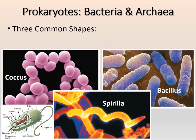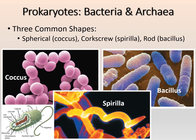Most prokaryotes have one of three shapes. They can be spherical, which we call coccus; corkscrew-shaped; or longer than they are wide, called bacillus. These are the three general common shapes of all prokaryotes, and we can classify them using these shapes — though DNA analysis has shown that shape doesn't necessarily reflect close evolutionary relationship.